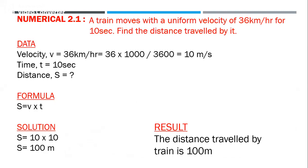Numerical 2.1: A train moves with a uniform velocity of 36 km/h for 10 seconds. Find the distance traveled. It's a pretty easy numerical. Uniform velocity is given as 36 km/h. You have to convert the values into base units — meter, second, kilogram. Kilometer per hour is not a base unit.